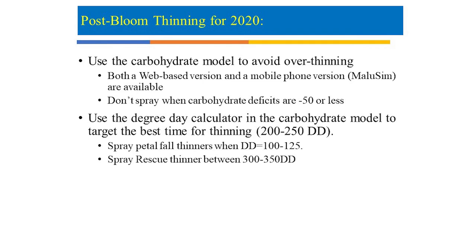Let me make a couple of comments about post-bloom thinning. Assuming blossom thinning goes well — we knock off extra kings with the first spray and extra laterals with the second — we'll be in really good shape, but we still probably need some post-bloom thinning. We're very excited about using the carbohydrate model to avoid over-thinning. A new 2019 version is available on NUA, and there's also a phone app called MaluSim available on both Android and Apple app stores. When carbon deficits are less than minus 50, I don't want to spray — the new version of the model will show a red box around days with that kind of deficit.